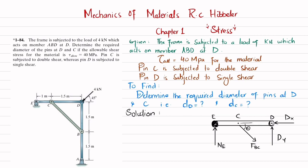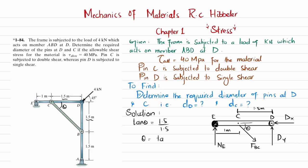The distance between E and C is 1 meter, and from C to D is 1.5 meters. From the figure, the vertical dimension is 1.5 m and the horizontal base is also 1.5 m. So tan(θ) = 1.5/1.5 = 1, giving θ = tan⁻¹(1) = 45 degrees.